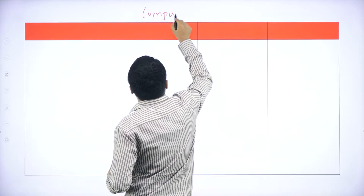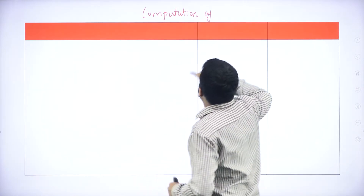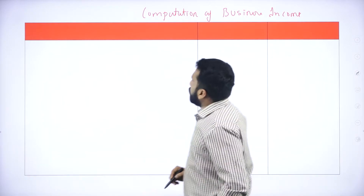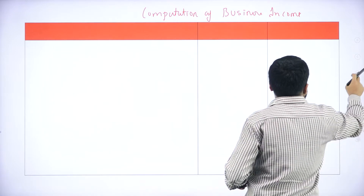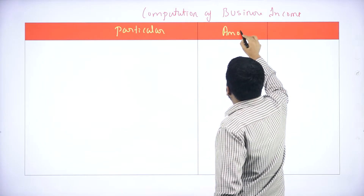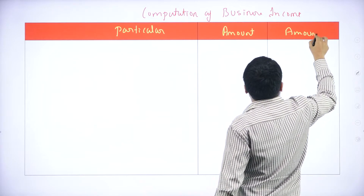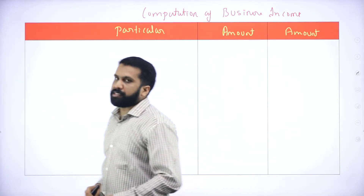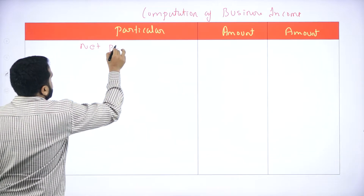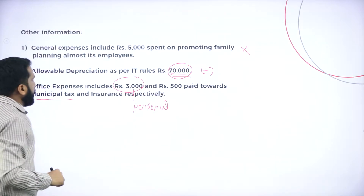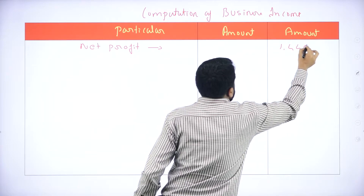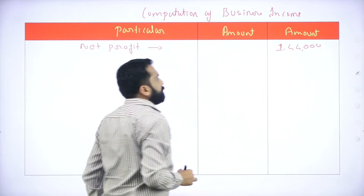Computation of business income. Under this, we are supposed to write one by one. Net profit — what is the net profit you have? You have a net profit of 1,44,000.